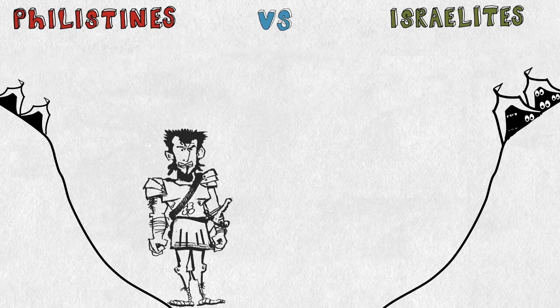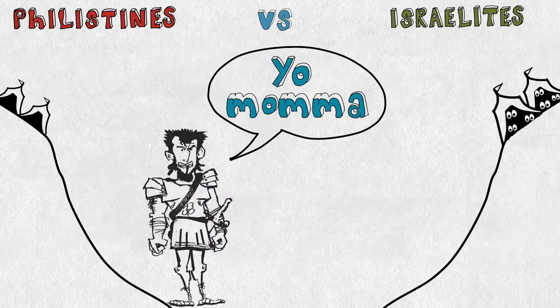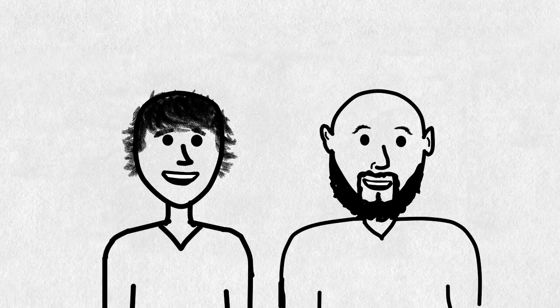For 40 days, Goliath would insult the Israelites and tell them mean things like... Oh, I know. He would say mean things like yo mama jokes. Like, yo mama is so old, she dated Phil Osteen. What? No, it wasn't yo mama jokes. Oh.